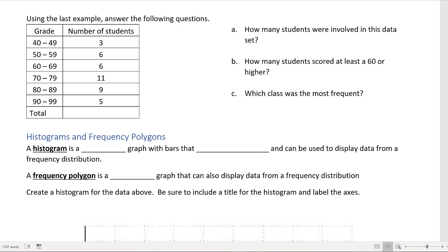Using our frequency distribution from our last example, I want you to answer the following questions. How many students were involved in this data set? Well, if we added up 3 plus 6 plus 6 plus 11 plus 9 plus 5, we get 40. So 40 students were involved in this data set.